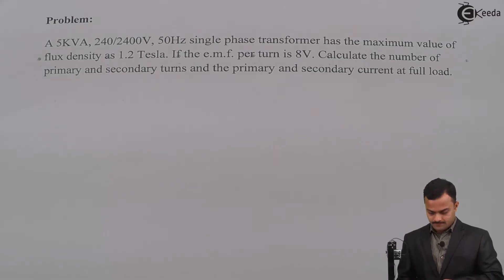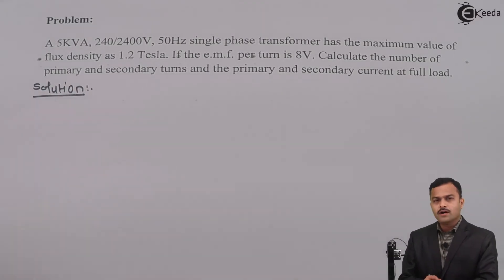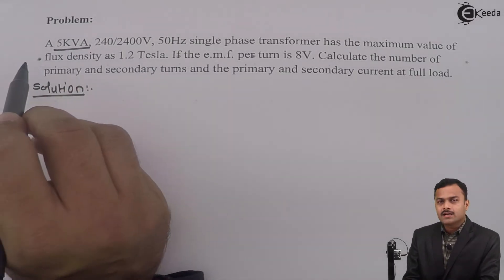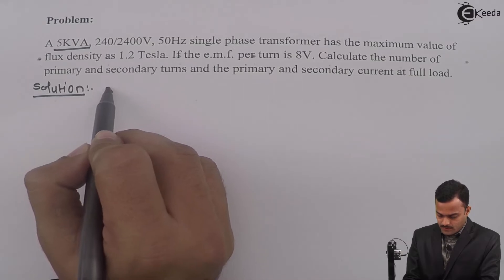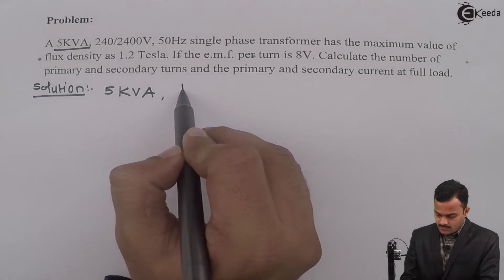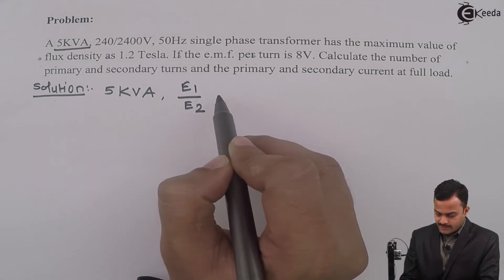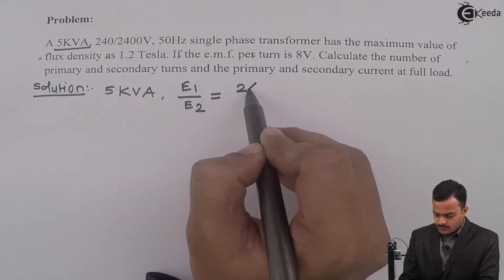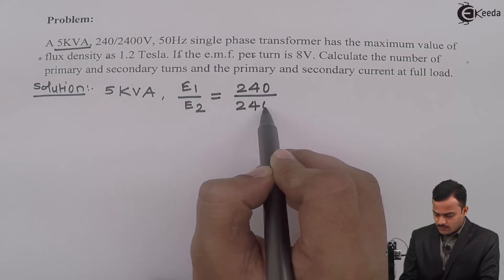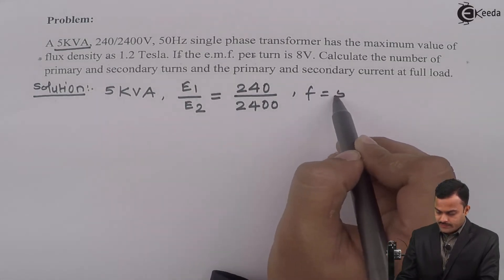So, let us solve. First, we will list out the things given. A VI rating of a transformer is given 5 kVA and EMF ratio is given, that is E1 by E2 equal to 240 upon 2400. Obviously, frequency is 50 hertz.